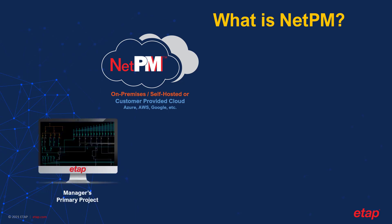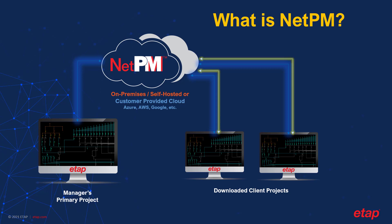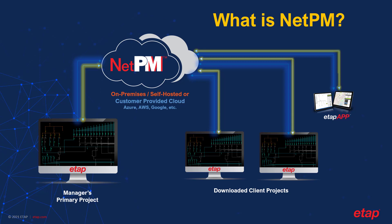For a networked environment, project managers can upload any given password-protected project to NetPM for other registered client users to download. The changes made to each project are logged and passed through NetPM back to the original primary project. These modifications can either be automatically synchronized or individually reviewed and approved by the project manager. Additionally, NetPM can also communicate with both ETAP app, our field data collection and validation tablet application, as well as eProtect, our centralized asset management and fault analysis system.